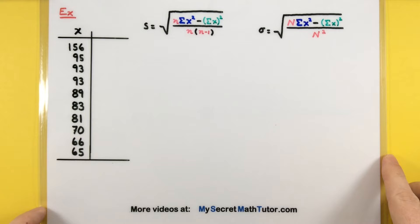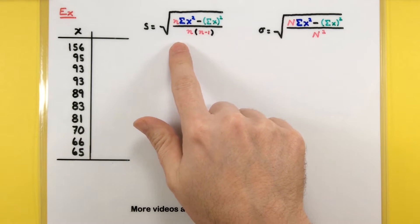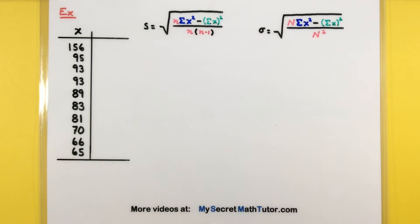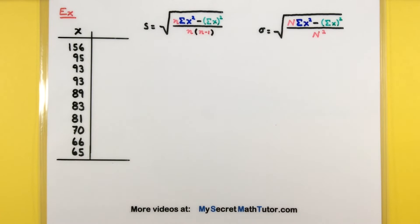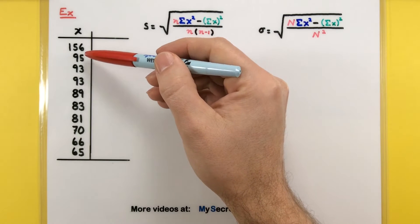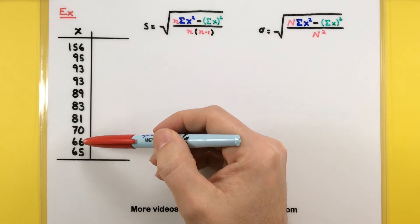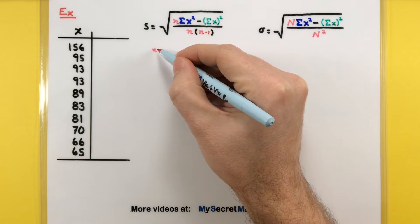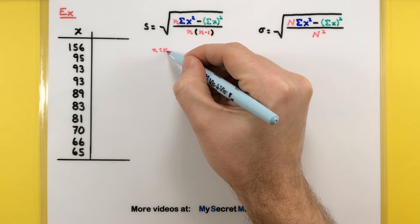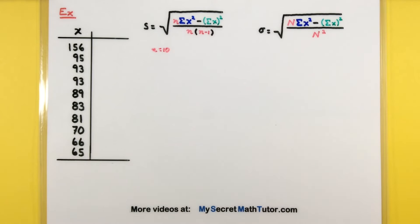So, here I have just a bunch of different data points, and I'm going to assume these are all from a sample of some sort. And we're going to need to find these various different pieces of the formula and plug them in. One of the pieces we'll need to find is this n, and that simply stands for how many data points do you have. So, if we just count these up real quick, I got 1, 2, 3, 4, 5, 6, 7, 8, 9, 10. So, there's 10 different data points, so we know that n is equal to 10.